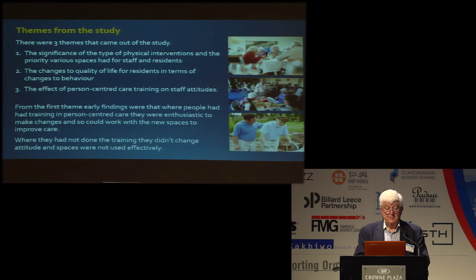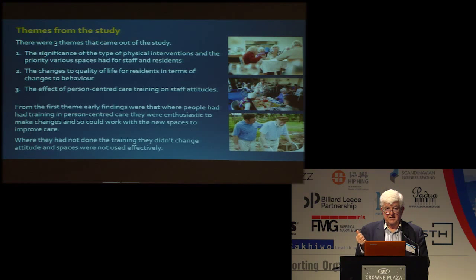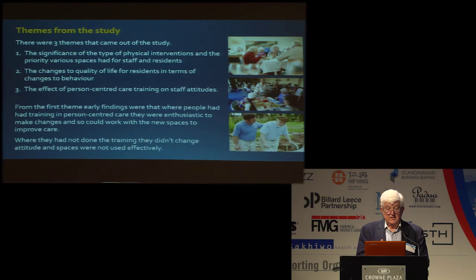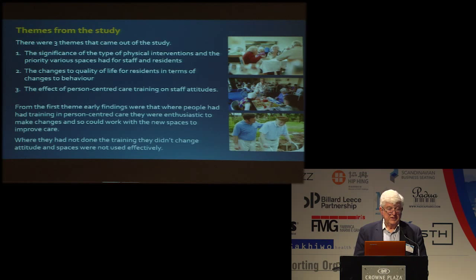The three main themes were: the significance of the type of physical investigation and the priority of various spaces for staff and residents — we asked which spaces were important to them, not just cataloguing 14 categories. The second theme was the changes to the quality of life of residents in terms of changes to behaviour — did people change their behaviour as a result of the intervention? And the third was the effect of person-centred care training on staff attitudes.